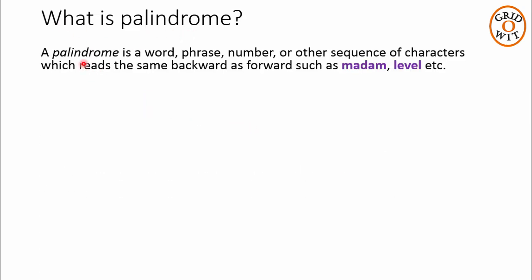Palindromes are the sequence of characters or numbers which reads the same from backward as from forward. For example, the word 'Madam' — if you read it from right, it is the same as if you read it from left. Another example is the word 'level' — if you read it from right, it is the same as if you read it from left, that is 'level'.